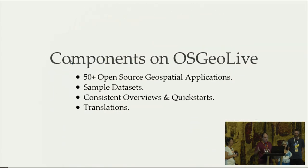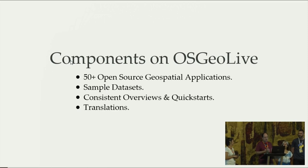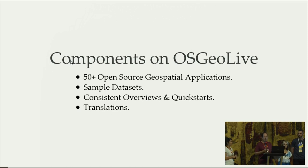What are the components? We have more than 50 open source geospatial applications. We include in the ISO the sample data sets. We have documentation which is split into overviews and quick starts, so you can find detailed information about the project you want to test and use. The quick starts are like small tutorials that you can run within five or ten minutes to get you started with a project. And of course we have translations, which Vicky and Nicolas will talk about later.